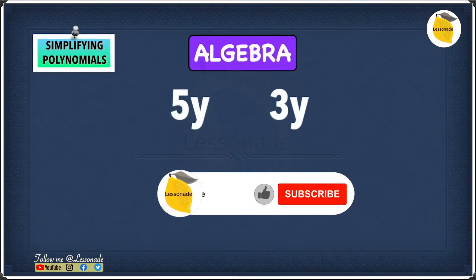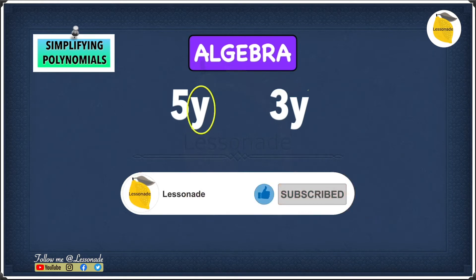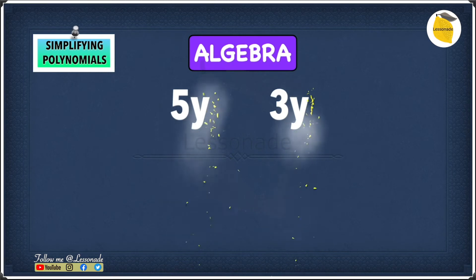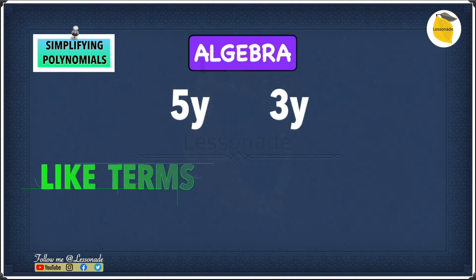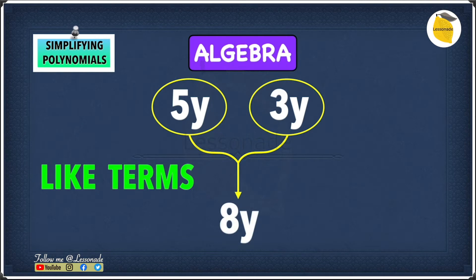The first example is 5y and 3y. Both of them have y as their variable part, and we know that y and y are the same. Therefore, these are like terms, which means we can combine 5y and 3y to make it simpler. When combining these two, you will get 8y.